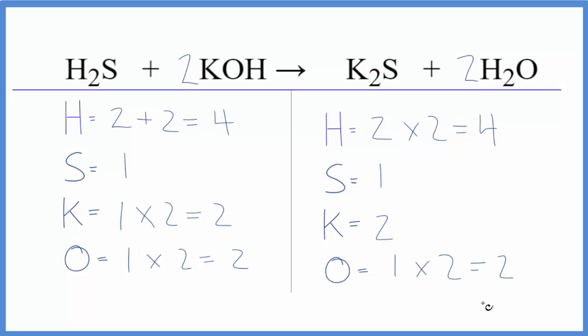One of the keys is to try to get the hydrogens to an even number, and that makes the balancing a lot easier. When we have H2S plus KOH, this is an acid and this is a base. This is a neutralization reaction, so we end up with a salt.